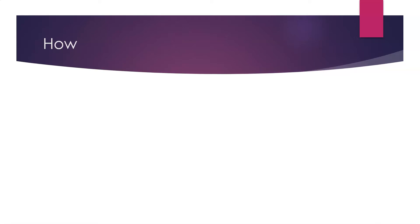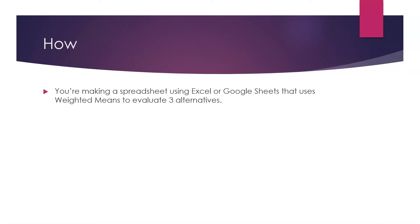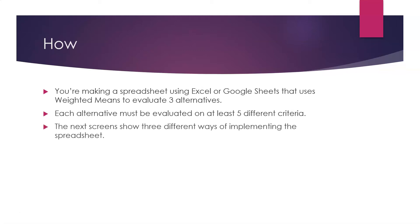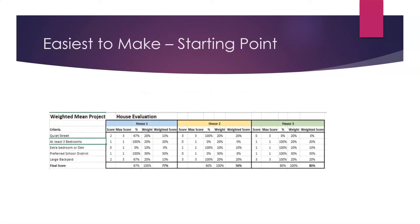You're making a spreadsheet using Excel or Google Sheets that uses weighted means to evaluate three alternatives. Each alternative must be evaluated on at least five different criteria. The next screen shows three different ways of implementing the spreadsheet. The easiest to make — and I'd recommend this as the starting point — lays out all of the calculations in front of you so you can work through them one at a time and immediately see the results on screen.